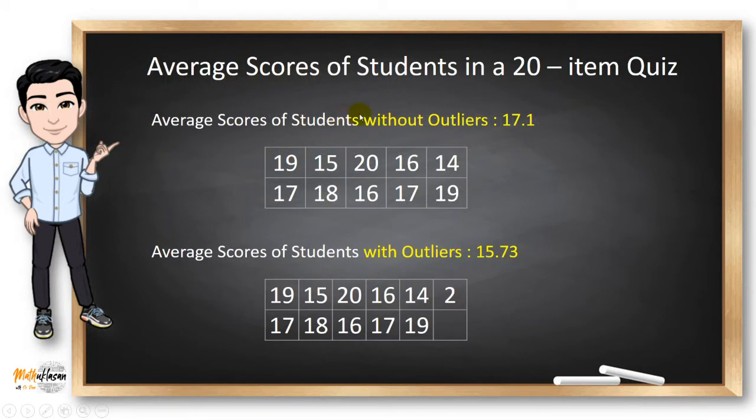The average scores of students in a 20 item quiz are shown below. Notice that the first data set contains values that are within the range of 14 to 20, and the average is 17.1. While the second data set contains 2, which is extremely lower than the other data. So 2 here is called the outlier. So adding this outlier drastically changed the value of the mean to 15.73.